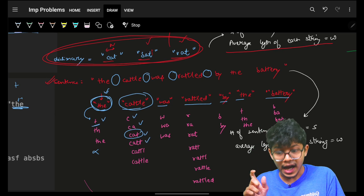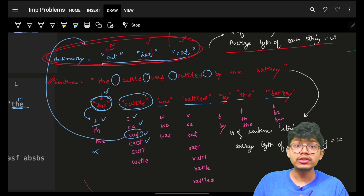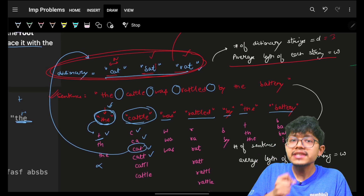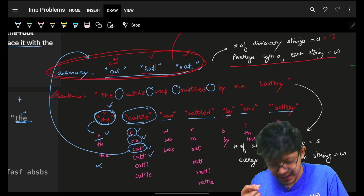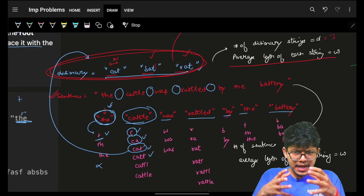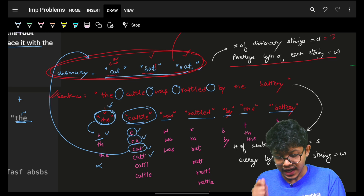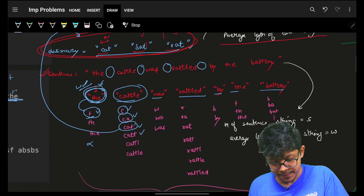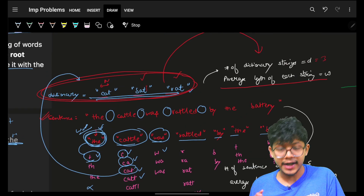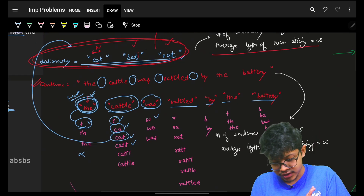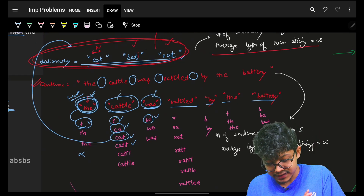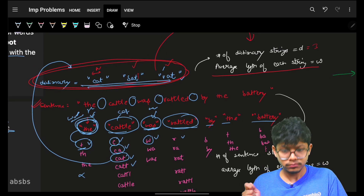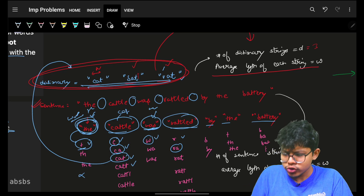For 'cattle', going through 'c', 'ca', 'cat' — at 'cat' I find my answer, so 'cat' is the result. For 'was', I cannot even find 'w', so I return 'was' entirely. For 'the', the same — return 'the'. For 'rattled', 'r', 'ra', 'rat' — I find 'rat'. So the answers so far are: 'the' → 'the', 'cat' → 'cat', 'was' → 'was', 'rat' → 'rat'.